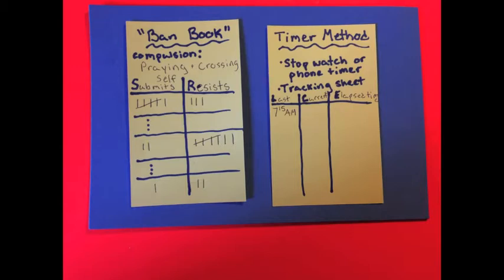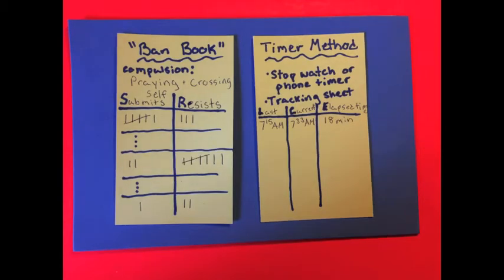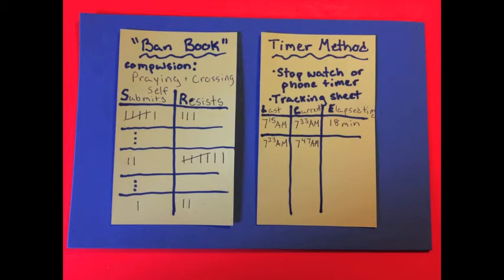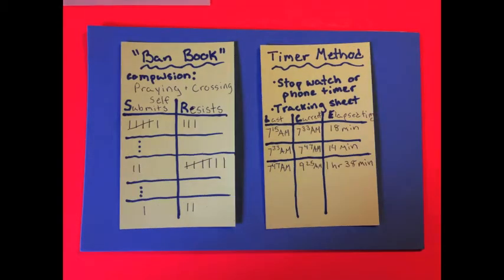So, if I woke up in the morning and the first compulsion I did was at 7:15 AM, and then I was ritual-free until 7:33 when I did another compulsion, elapsed time in-between would be 18 minutes. I'm going to carry that 7:33 time down. Then, say that I resisted all rituals until 7:47. I would write down that 7:47 and calculate out that the elapsed time between 7:33 and 7:47 is 14 minutes. Again, same pattern, carry down the 7:47, wait until you do your next ritual, say at 9:25, and calculate the time in-between, in this case, 1 hour and 38 minutes.